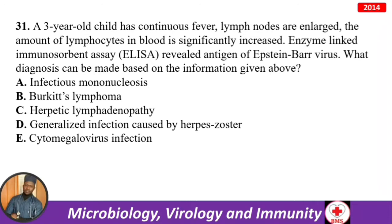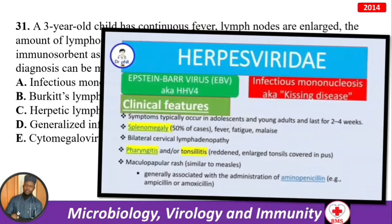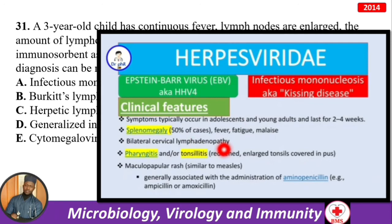A three-year-old child has continuous fever, enlarged lymph nodes, and significantly increased lymphocytes. ELISA revealed antigen of Epstein-Barr virus — the diagnosis is infectious mononucleosis. EBV is human herpesvirus 4. It causes infectious mononucleosis, also known as kissing disease.